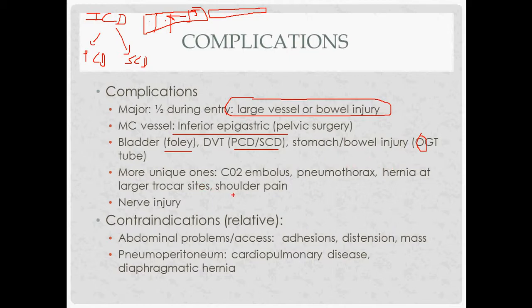More unique laparoscopic complications include CO2 embolism, pneumothorax, trocar site hernia (which is why you close larger trocar sites), and shoulder pain from irritation to the diaphragm — C3, C4, C5 refers pain up to the shoulder. Nerve injury can result from incisions or patient positioning, such as damage to the lateral femoral cutaneous nerve (L2-L3, causing anterior thigh anesthesia) or the peroneal nerve from positioning at the knee.